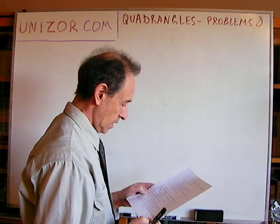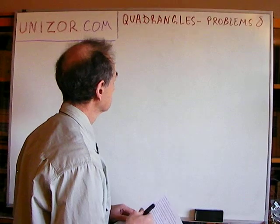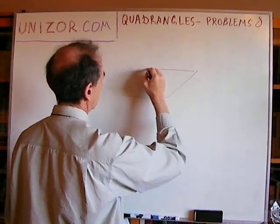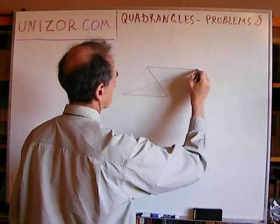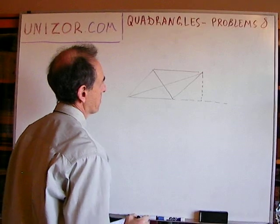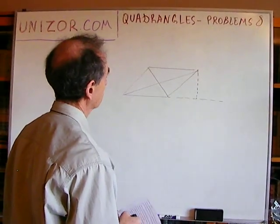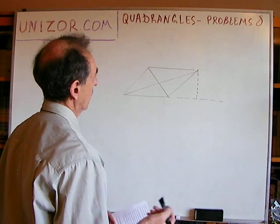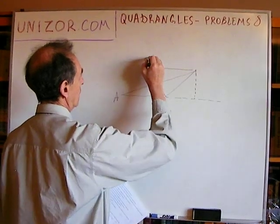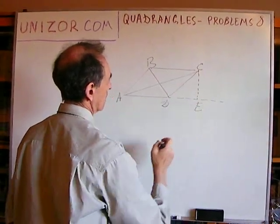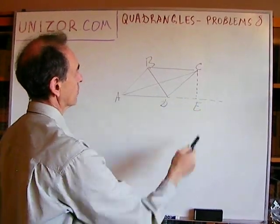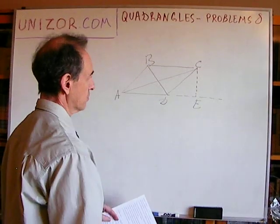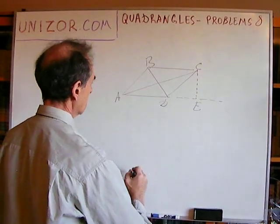Construct a parallelogram by two diagonals and an altitude. There are many ways of solving this particular problem. As an example, consider points A, B, C, D, E. Triangle ACE is a right triangle and we know the hypotenuse and the cathetus, so we can build it.